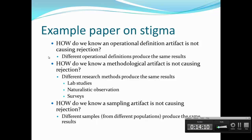How do we know a sampling artifact is not causing rejection? That is, is the sample we're using causing the person in our methodology to be rejected? If we look at different experiments and they use different samples from different populations, then no — it's not a sampling artifact. So being labeled must be what's causing rejection.